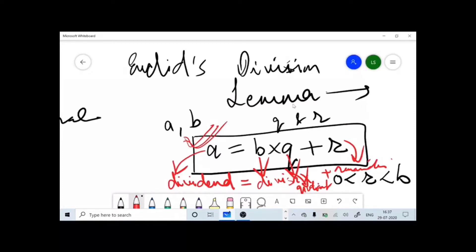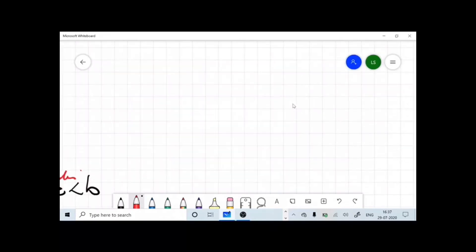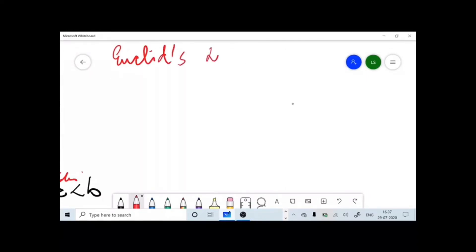This was Euclid's division lemma. Now I'm going to take you to its algorithm. Now the new thing which I'm talking about is Euclid's division algorithm. First of all, what is an algorithm? Algorithm is nothing but the steps of doing something. Here, this Euclid's division algorithm is a method used to find HCF of two numbers.